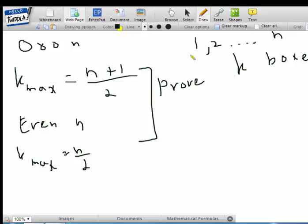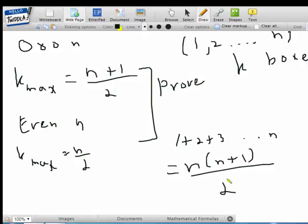So, the sum of the elements of the k boxes is going to be equal to the sum of this set, right? So the sum of this set is just 1 plus 2 plus 3 till n. And this is going to be equal to n times n plus 1 over 2.